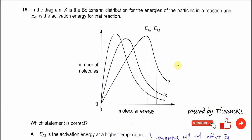Question 15. In the following diagram, X is a Boltzmann distribution of the energies of particles in the reaction. Ea1 is the activation energy of the reaction, so Ea1 belongs to this Boltzmann distribution of X.